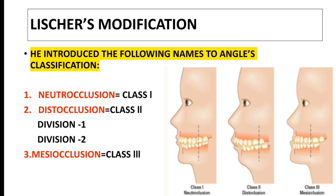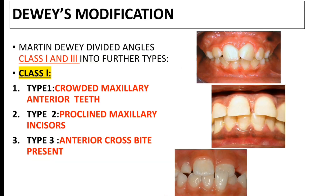Number three is mesio-occlusion for Class 3 malocclusion. If you look clearly at these names, they are also demonstrating the molar relationship introduced by Angle's Class 1, Class 2, and Class 3, which you can also see in these pictures. Now we will discuss Davis modification.